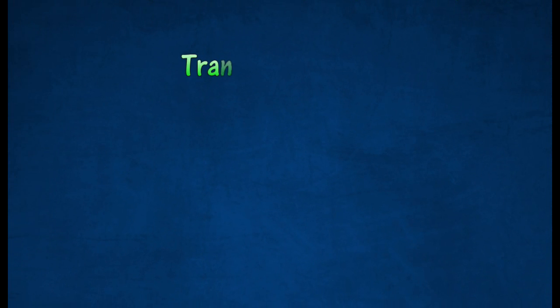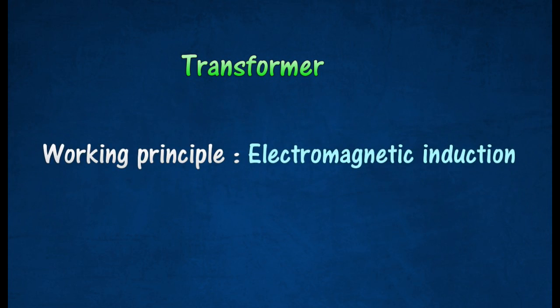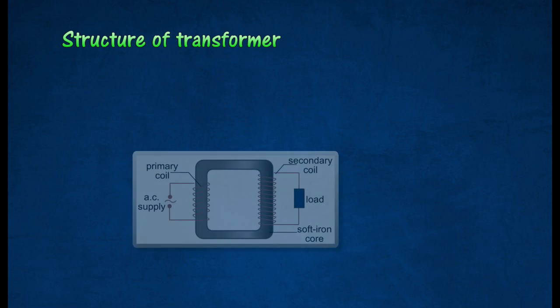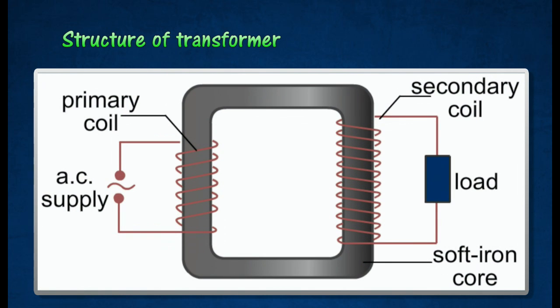A transformer is a device that changes an alternating potential difference from one value to another value, be it smaller or greater, using the principle of electromagnetic induction. The following diagram shows the basic structure of a transformer.